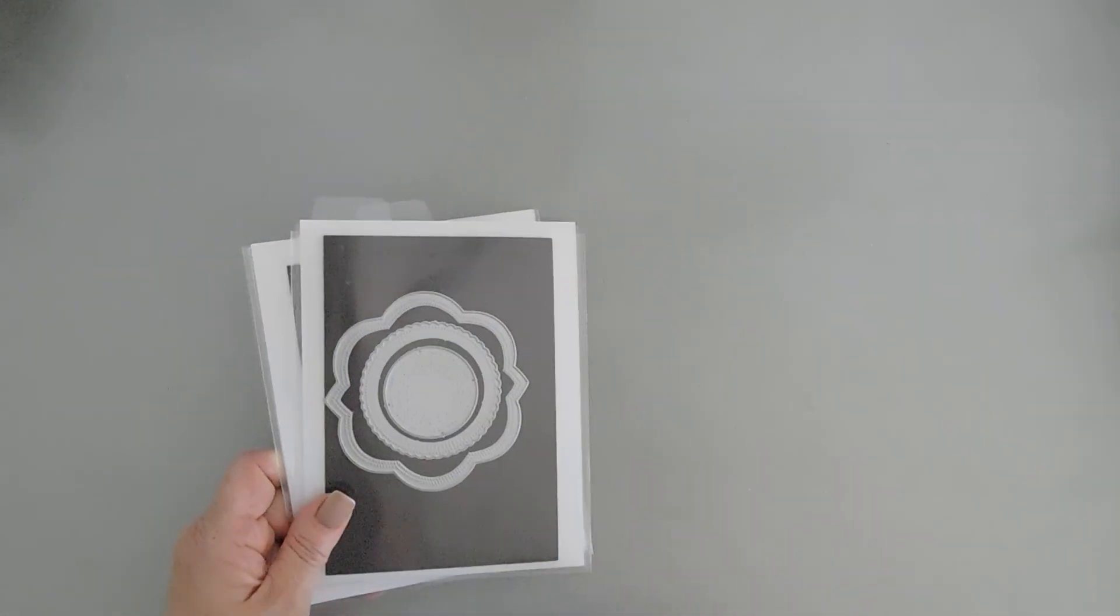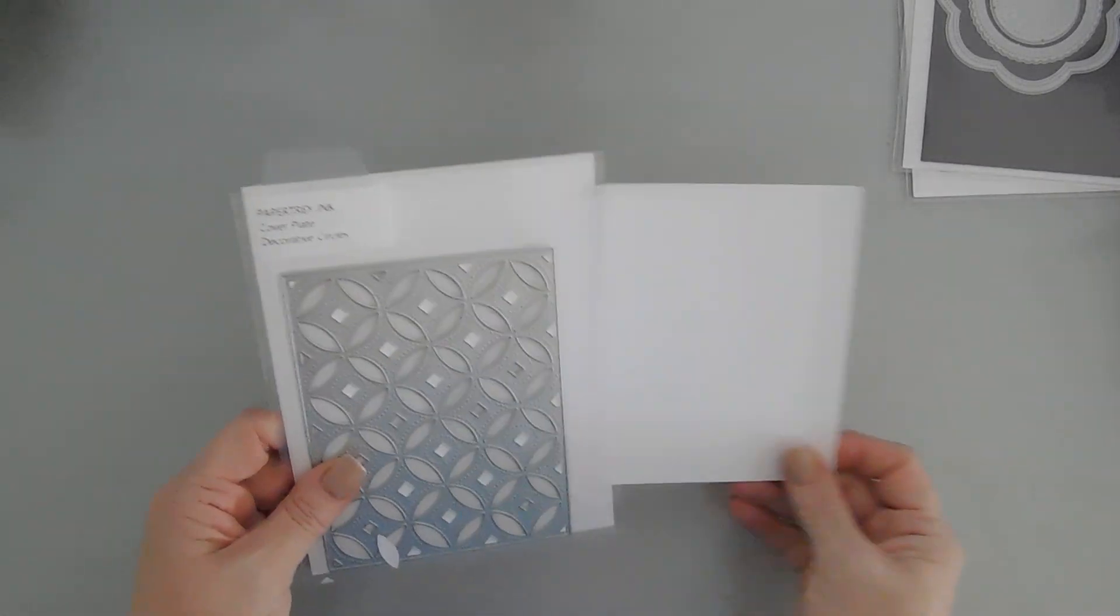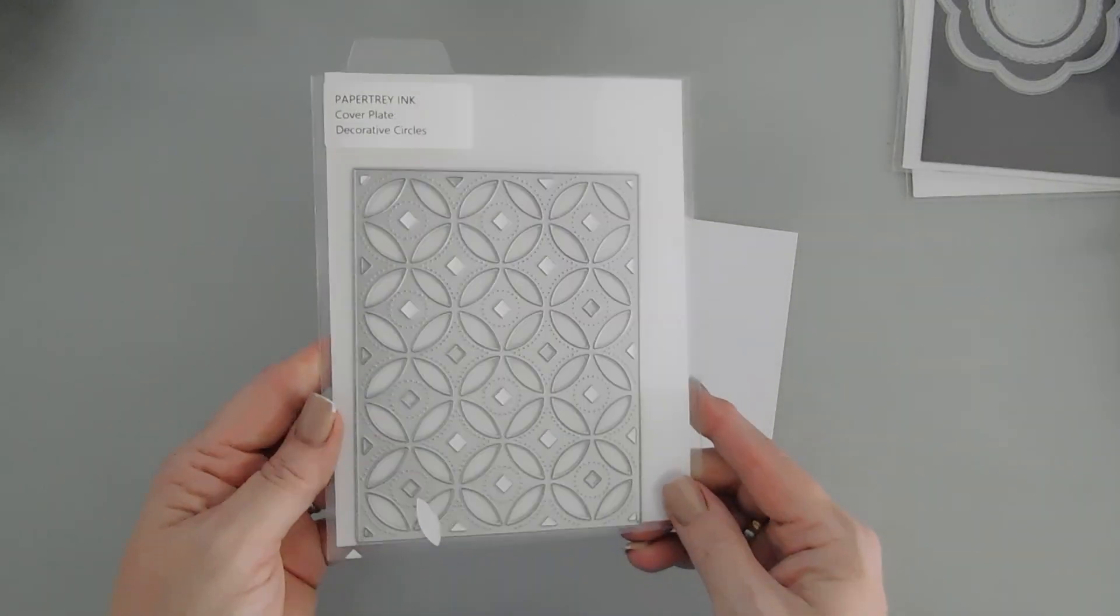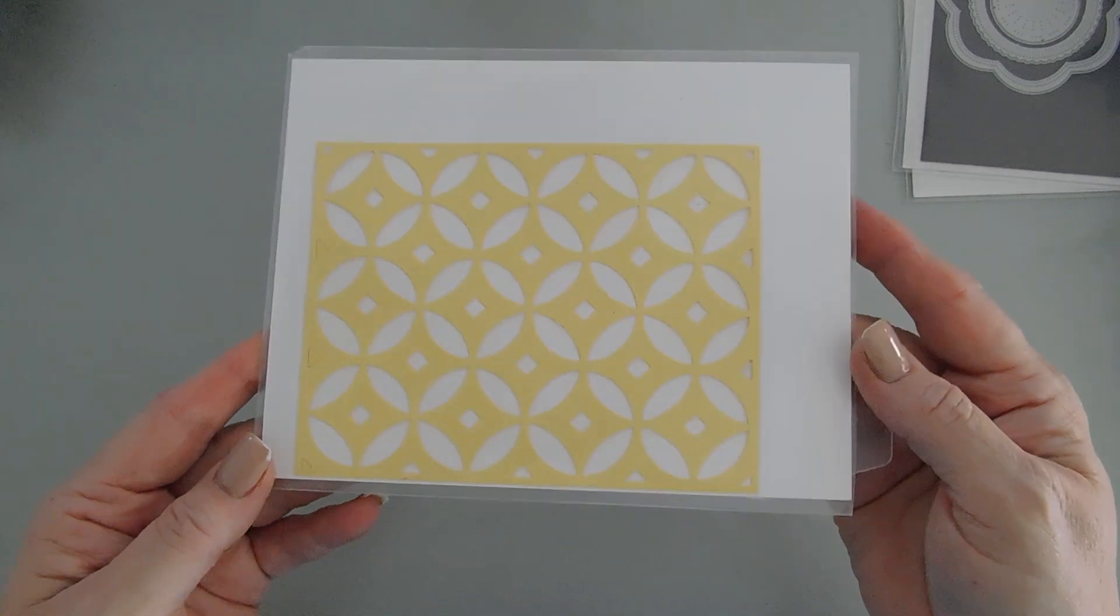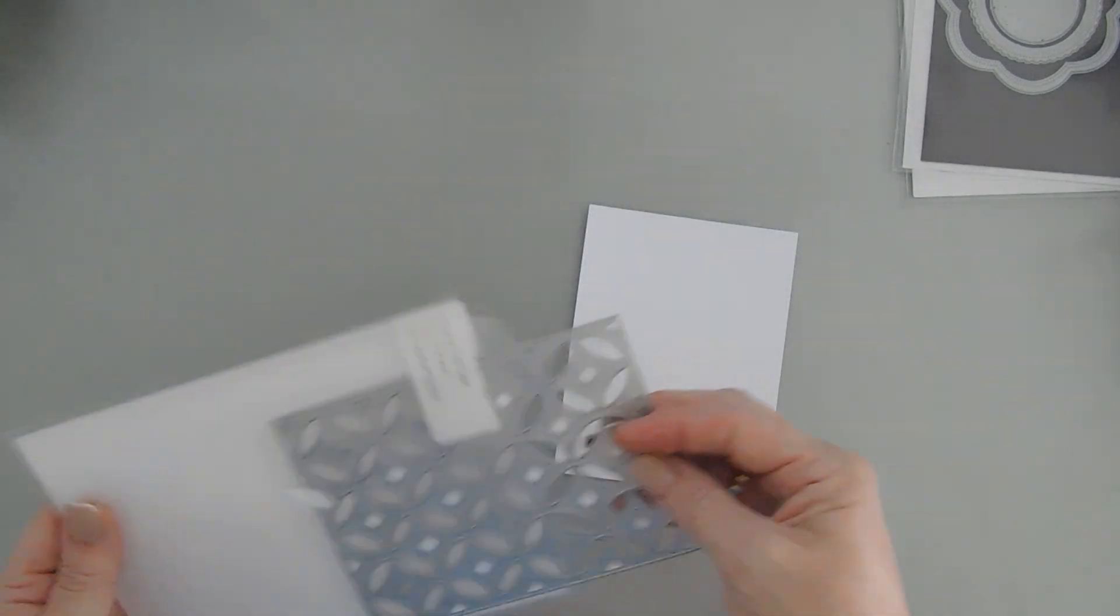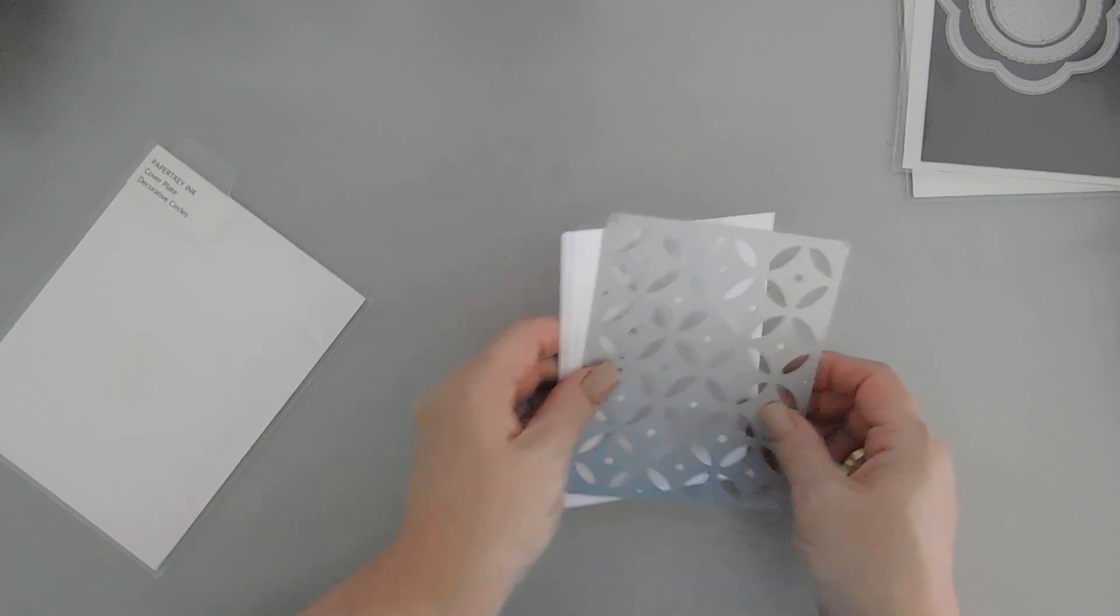We're going to first create a background, and I'm going to bring in another die set from Paper Tray Ink. This is the cover plate, the decorative circles. Such a pretty die. But I'm going to die cut this out with white cardstock for my background.